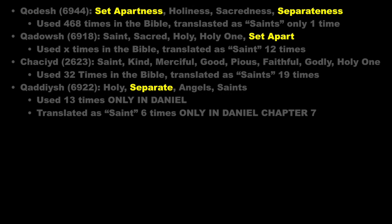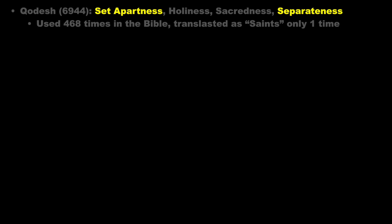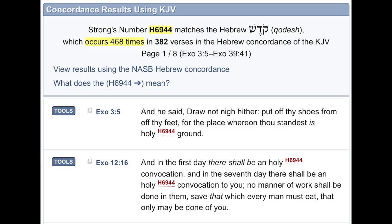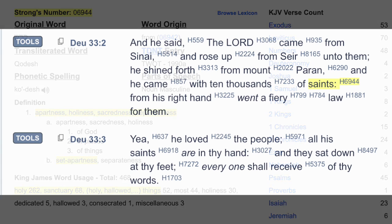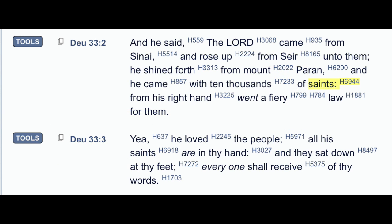In the Old Testament the translation of Saint stems from four different words. Strong's word number 6944 appears in the Bible 468 times. It means Apartness, Holiness, Sacredness, Separateness, or Set-apartness. It is most often translated as Holy and also used as Sanctuary or Hallowed Thing, but is only translated as Saints one time in Deuteronomy 33:2.